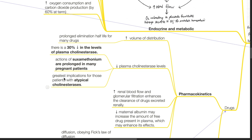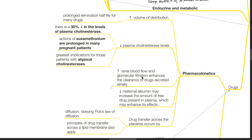Increased renal blood flow and glomerular filtration enhance the clearance of renally excreted drugs. Decreased maternal albumin may increase the amount of free drug present in plasma, which may enhance its effect.